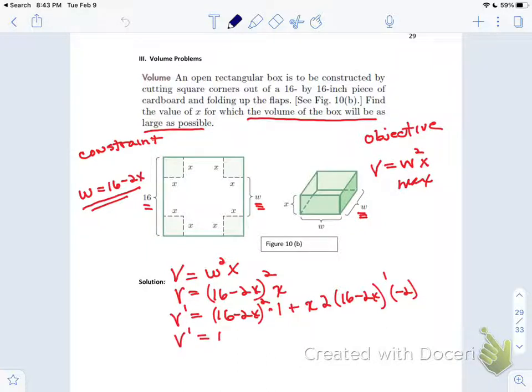v prime equals, I'm going to leave this be (16 minus 2x) squared, plus, let's clean this up. So this is going to not stay a plus, most likely, because I have a negative 2 times a 2x. So this is going to be minus 2x times (16 minus 2x). Now remember, I want to be able to set my v prime equal to zero. Since I have a quantity squared here, so it's a quadratic, I want to get this into factors.